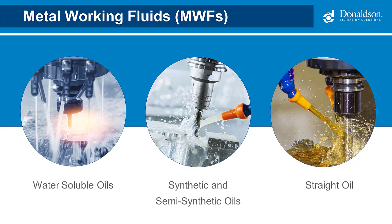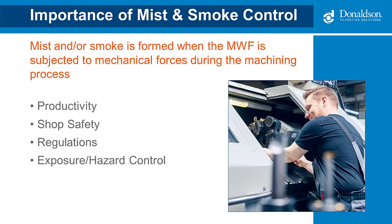Metalworking fluids are critical productivity enablers for all kinds of machining applications. Most common types are water-soluble oils, synthetic and semi-synthetic oils, and straight oil. These metalworking fluids are usually complex mixtures of oils, emulsifiers, corrosion inhibitors, buffers, biocides, and other additives. Metalworking fluid mist and smoke is generated from the mechanical friction and heat of turning metals and high-pressure fluid delivery systems during the machining process. That mist then becomes airborne. It's critical to control mist and smoke for multiple reasons including productivity, shop safety, regulations, and worker exposure. A concern with water-based fluids is the growth of bacteria and fungi; added biocides can help but have their own hazardous properties. A good place to start is your SDS sheets.